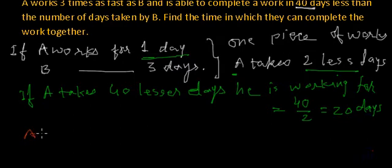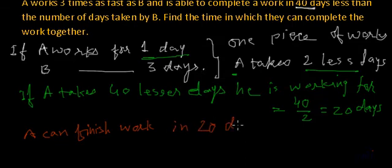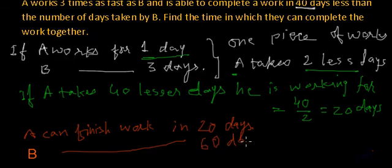That means A can finish work in 20 days. And B will be able to finish the same work in 20 plus 40, 60 days. And we can find this from here also. For every one day which A takes, B takes three days. So for 20 days which A takes, B will take 20 multiplied by three, that is 60 days.